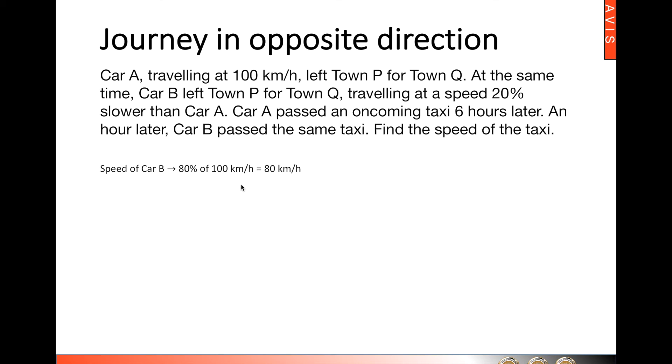Since car B is only travelling at 80 km per hour, while car A is travelling at 100 km per hour, that means for each hour travelled, car B would be 20 km behind car A.